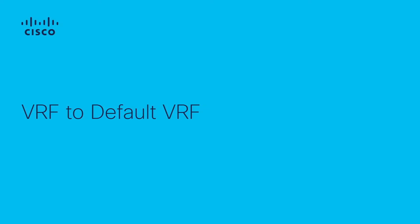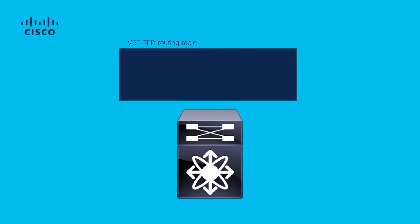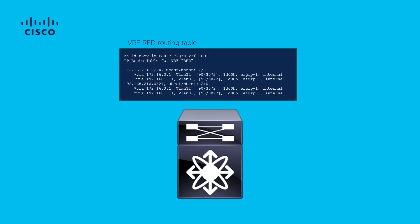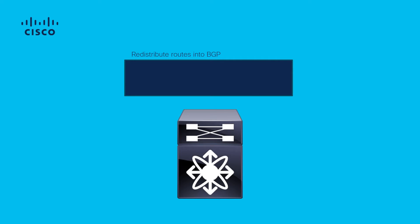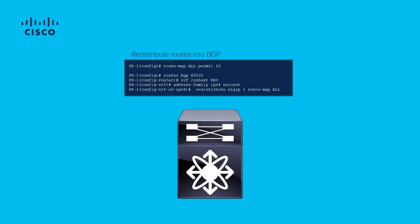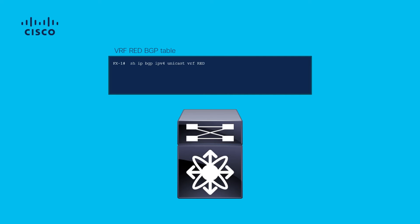VRF to Default VRF. Nexus has received two routes in its VRF red via EIGRP. The configuration leaks the routes into the default VRF. For the purpose of this example, only the route 192.168.210.0/24 is leaked. Redistribute the routes which exist in the VRF red routing table into BGP. Since the routes are in VRF red, the redistribute command in BGP goes under the VRF red Address Family IPv4 Unicast section. After redistributing the routes into BGP, we can confirm they are now seen via BGP on VRF red.